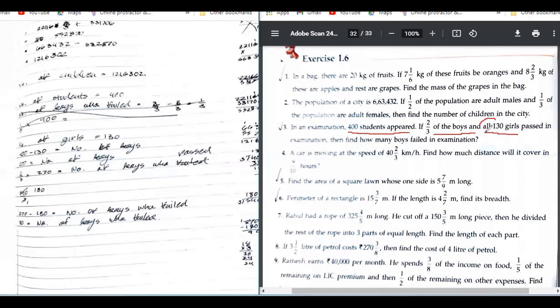They have given the number of girls in the examination and need to find how many boys failed in the exam. This is partiality, isn't it? They are passing all the girls and making boys fail.